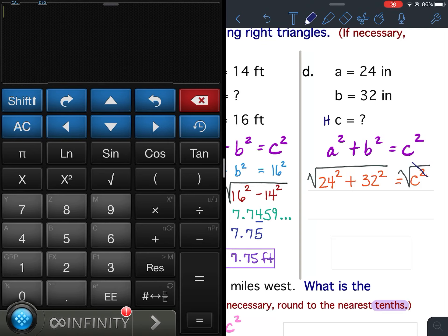That would cancel the square and the square root out. So we're going to put in the calculator square root of 24 squared. Finding the hypotenuse means addition. 32 squared. Hit equals and it's 40.